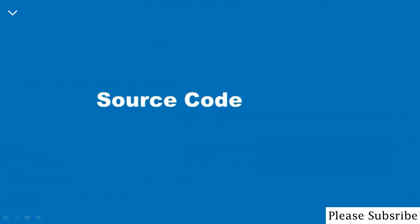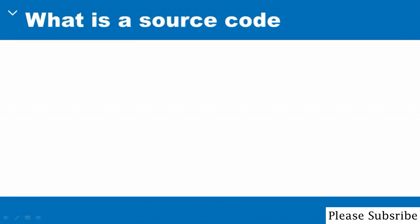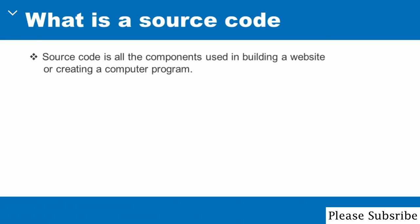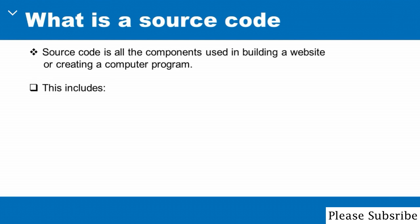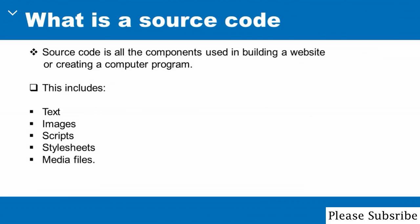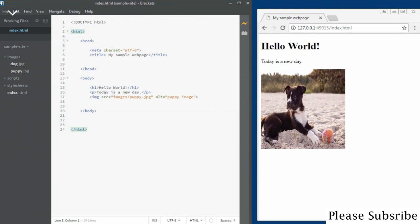In this video we'll look at what source code is and also show you how to view a web page source. Source code basically refers to all the components used in building a website or creating a computer program. This includes things like text, images, scripts, style sheets, media files, and so on.